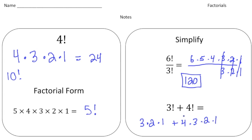Alright, now the key thing about this is you still have to follow the order of operations. So I'm going to multiply first and then add. So 3 times 2 is 6. 6 times 1 is 6. So this part is 6. And then plus 4 times 3 is 12. Times 2 is 24. Times 1 is 24. And then finally, 6 plus 24 equals 30.